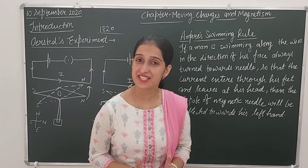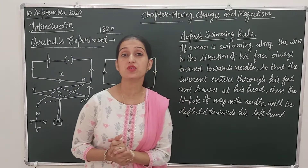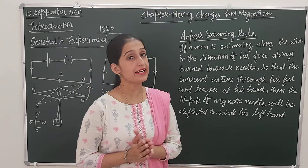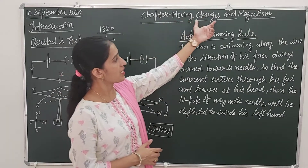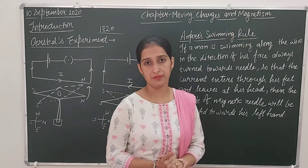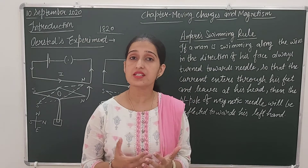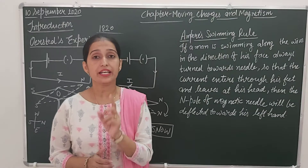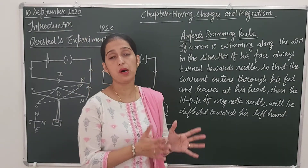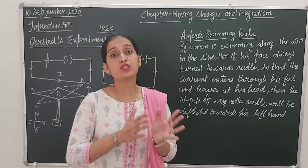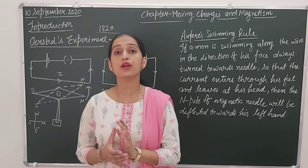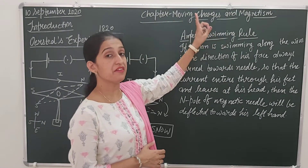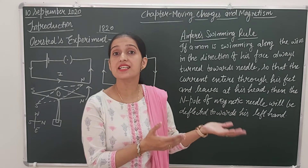Hello everyone. In physics class today we are going to start the new chapter of class 12, that is the 4th chapter, and the name of the chapter is Moving Charges and Magnetism. In this chapter we are going to discuss magnetism, but not due to a magnet. In your junior classes you learnt about magnetism that was all about due to magnets. But here we are going to discuss magnetism due to moving charges, and we know moving charges create current.